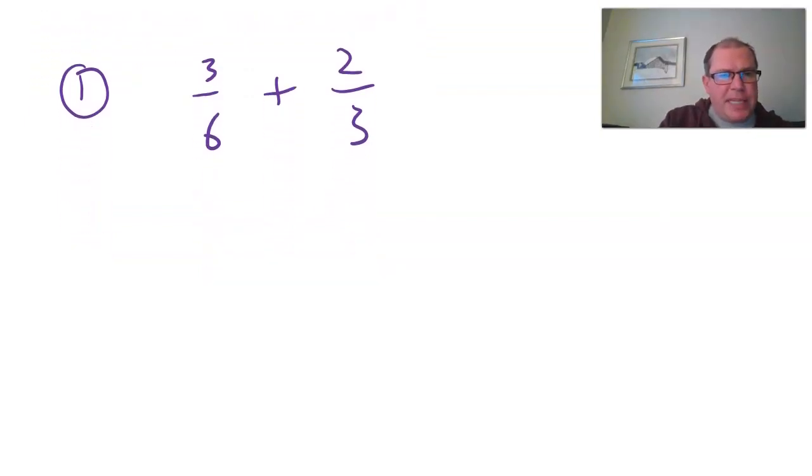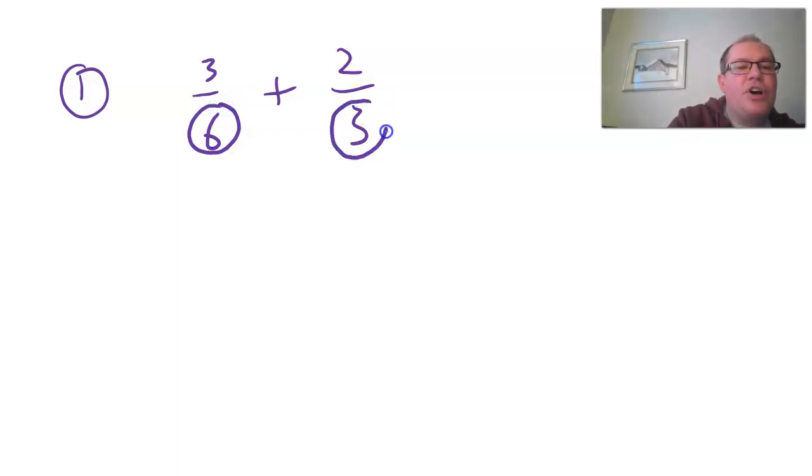Okay, so here we go. So I've got three sixths, add two thirds. I can't add them at the moment because here I'm counting sixths, and I've got three of them. Here I'm counting thirds, and I've got two of them. And I need to make the denominators the same, so I'm counting the same thing.